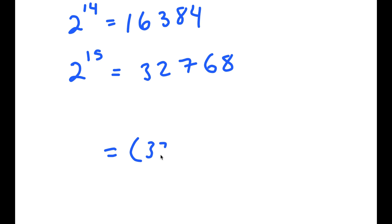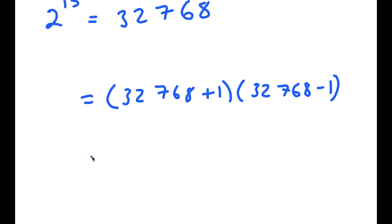So I have 32,768 plus 1 times 32,768 minus 1. And now this is equal to 32,769 times 32,767.